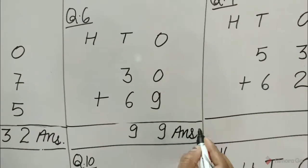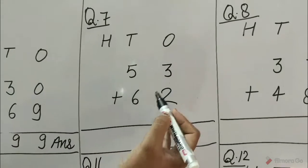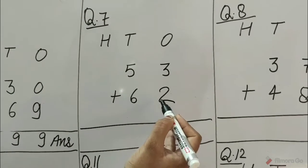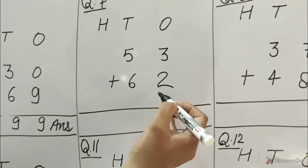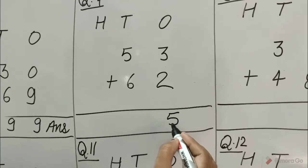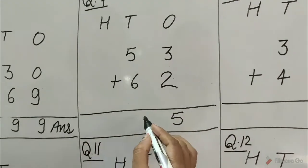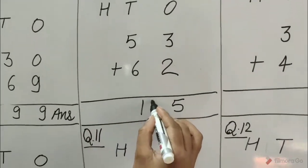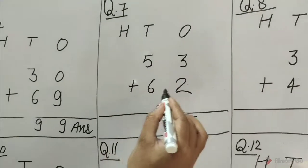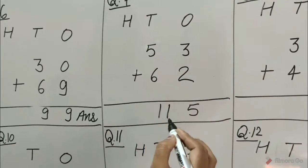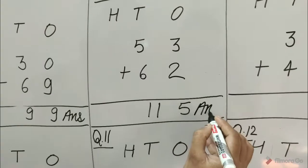Question number 7: 53 plus 62. 3 plus 2 is equal to 5. 5 plus 6 is equal to 11. So, 53 plus 62 is equal to 115.